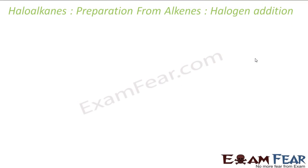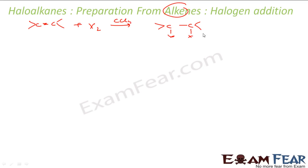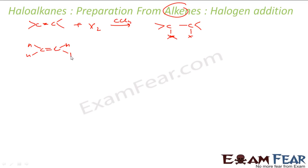Now let us talk about halogen addition. So I have an alkene. If I want to add halogen — if I add some halogen in presence of CCl4 — what you get is one X here and one X here. X can be anything: chlorine, bromine, anything. One example I can take is: I have ethene, in this let me add bromine in presence of CCl4. I get Br-CH2-CH2-Br — that is what we got.